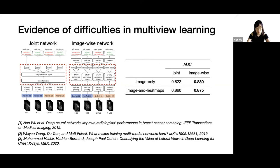Similar observations have been made in other works. For example, in Wang's work, they showed that some multi-modal networks perform worse than single-model networks in video classification tasks. And in Hush's work, they observed that it is useful to use lateral views for some tasks, but it is not trivial to find a good way to incorporate information from that view into the networks.